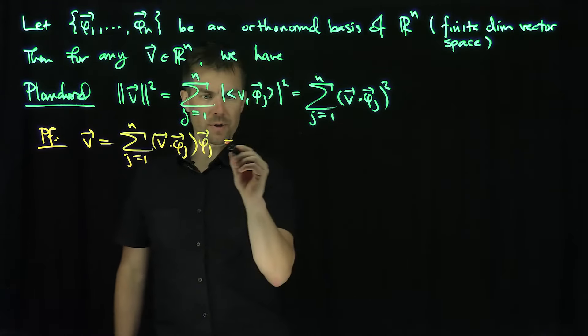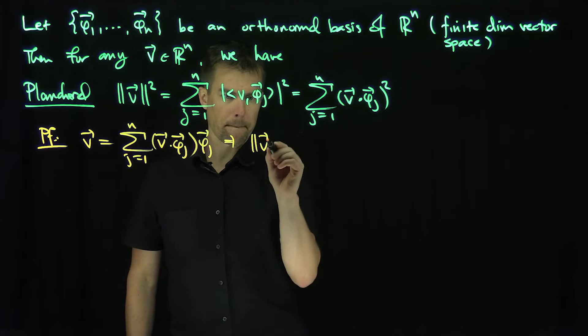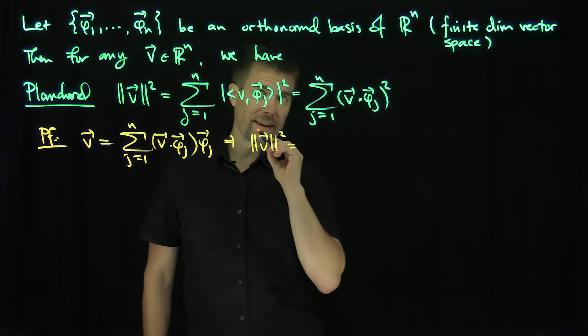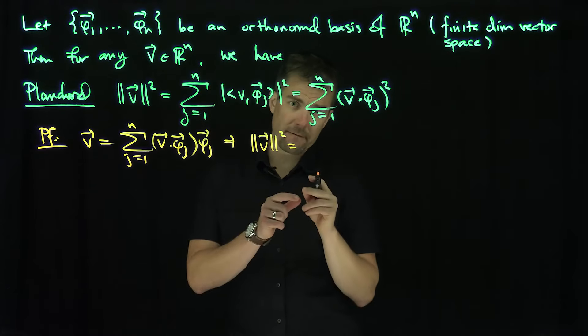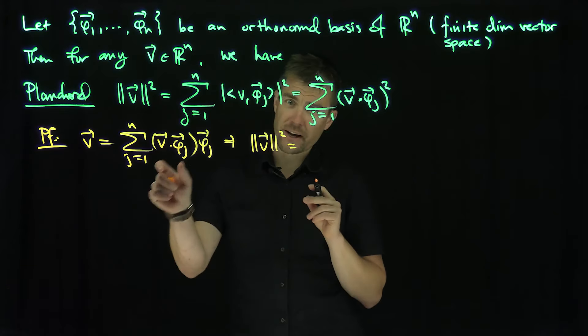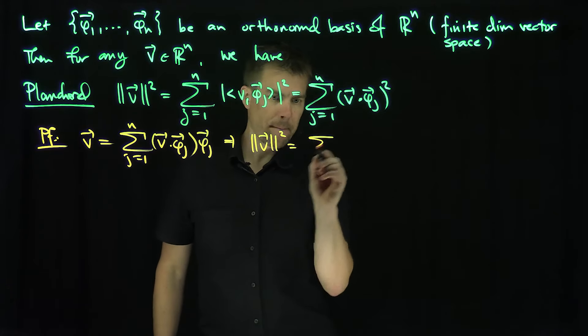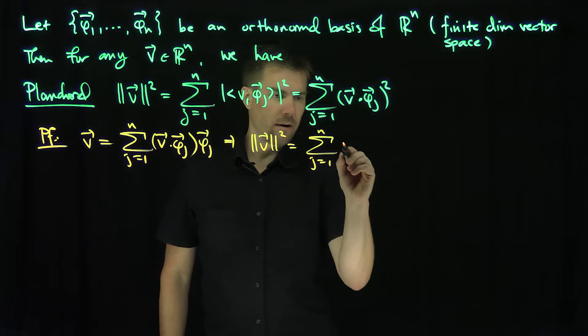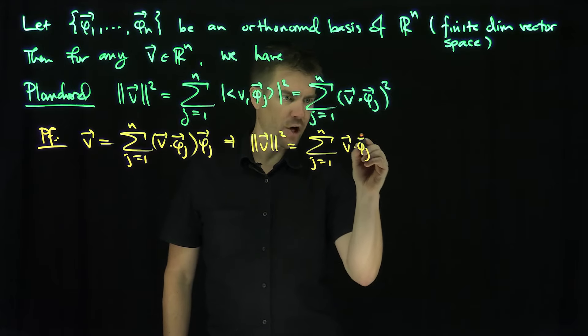And so if I do the norm of v squared, this implies that the norm of v squared. And here's the only catch with this. The only catch with this is when you dot v with itself, you use a different index from j. So it's going to be the sum from j equals 1 up to n of v dot phi_j times phi_j, dot...